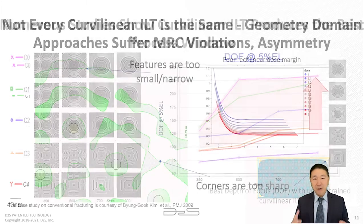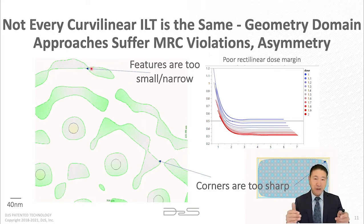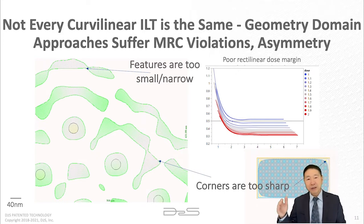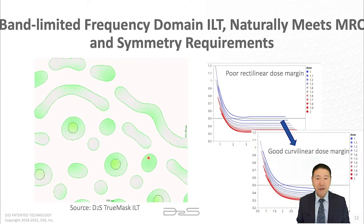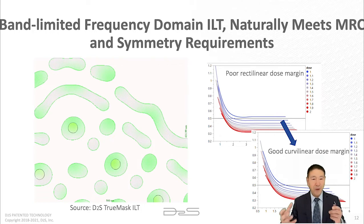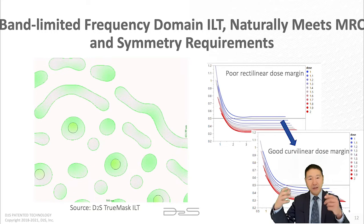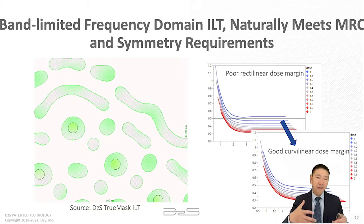Not every curvilinear ILT gives you the same result. The real-domain solver, although it generates curvilinear patterns, may produce patterns that are too small, violate mask rules, or have sharp corners. The band-limited frequency domain solver, as D2S uses, guarantees it doesn't generate sharp corners or very small patterns that violate MRC rules. Another benefit of solving in the frequency domain is that you tend to get symmetric patterns when the original pattern and the illumination source are symmetric.